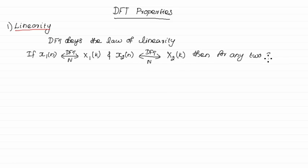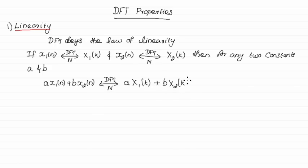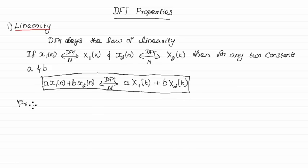Then for any two constants a and b, a·x1(n) + b·x2(n), when taking an N-point DFT, will be equal to a·X1(k) + b·X2(k). Now let us see the proof for this linearity property.